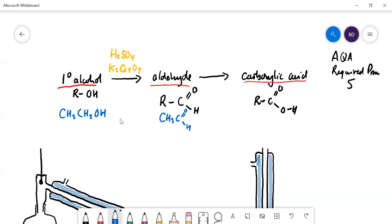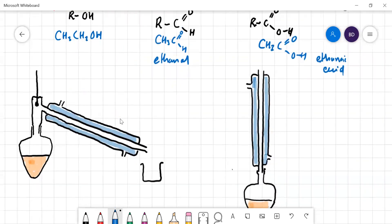If you oxidize it more, you get the carboxylic acid, ethanoic acid. How do you make the experiment work so that you just get ethanal, just the aldehyde, or if you want to oxidize it fully to ethanoic acid? The way you do that is by changing the apparatus.